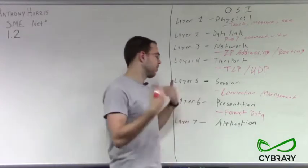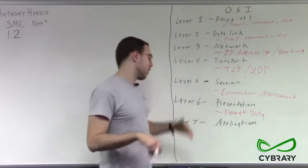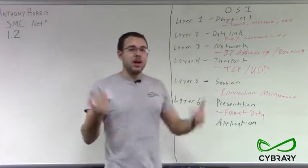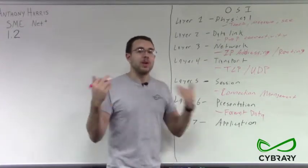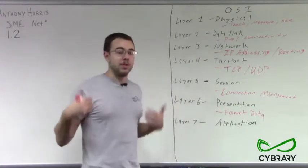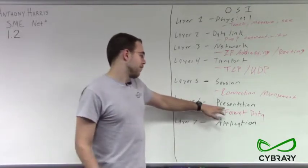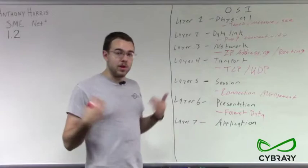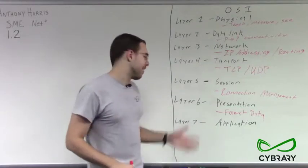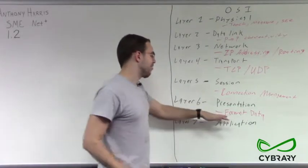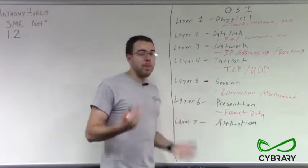and then when we're receiving it, we are formatting it so that we can understand it at the application level. We can see it, we can put it on our computer and display it, and that's what our presentation layer is going to be doing. And we gave the example of an encryption device as a layer six device because it actually takes that data and it formats our data.